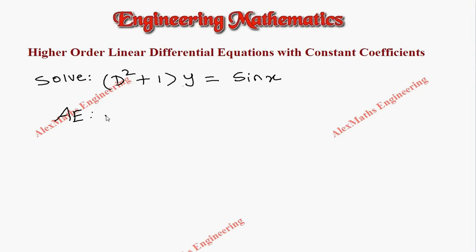The auxiliary equation is m² + 1 = 0. From this, m² = -1, and m = ±i. So it is a complex root in the form α ± iβ, where α = 0 and β = 1.